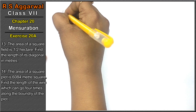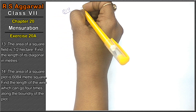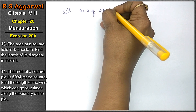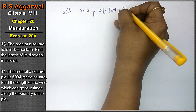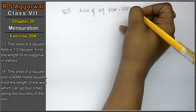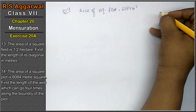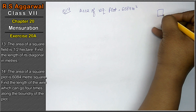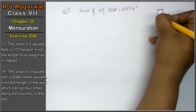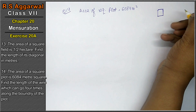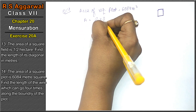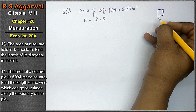Let's do question number 14 of exercise 28, Mensuration. Question 14: the area of a square plot = 6084 meter square. Find the length of the wire which can go 4 times along the boundary of the plot. हमें side पता करनी पड़ेगी. Area का formula है side × side.